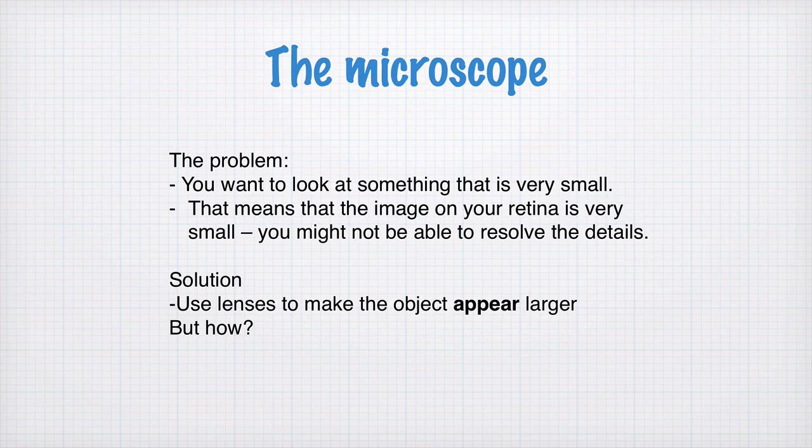So first off we're going to look at the microscope. Now to summarize, the problem is that you want to look at something that is very small. That means the image on your retina is very small and you might not be able to resolve the details, as we discovered by looking at the example of the retina display question. Now the solution is to use lenses to make the object appear larger. But how?